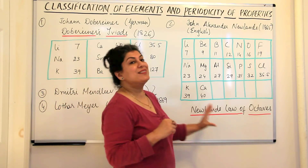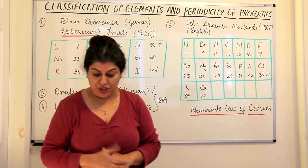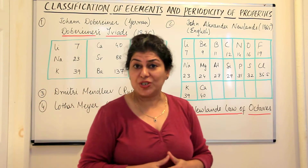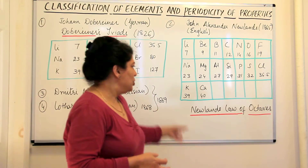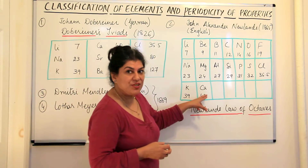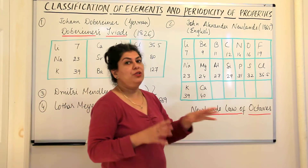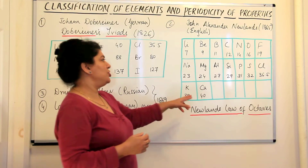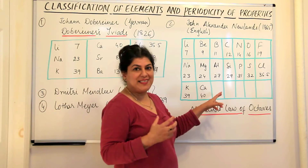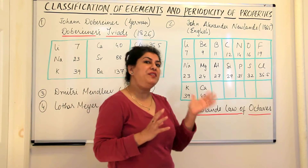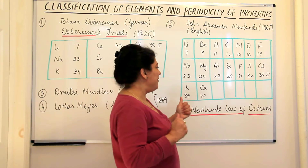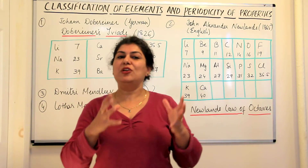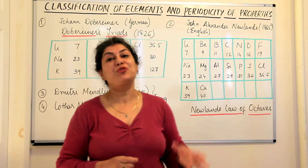That's why this was known as the Newlands law of octaves. But there was a problem — when he came to the element calcium, after calcium the Newlands law of octaves broke down. The next element was not similar to aluminum; the next element had properties which were very different. Therefore this became his limitation — this law was applicable only up to calcium.